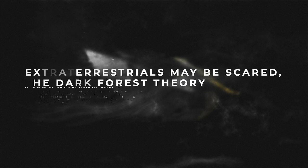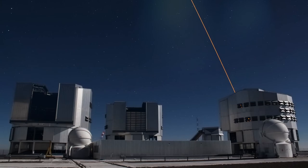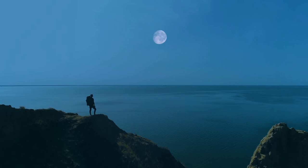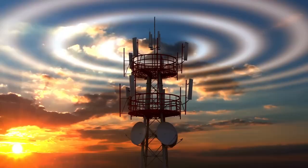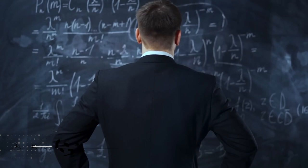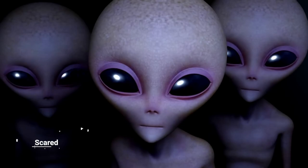Number 2: Extraterrestrials may be scared. The dark forest theory—based on probabilities drawn from things like the Fermi Paradox and Drake's equation—many people have found themselves wondering if the likelihood of intelligent extraterrestrial life is so high, why haven't we found any, or why haven't any found us? Well, one theory called the dark forest theory has a simple explanation: they're scared.